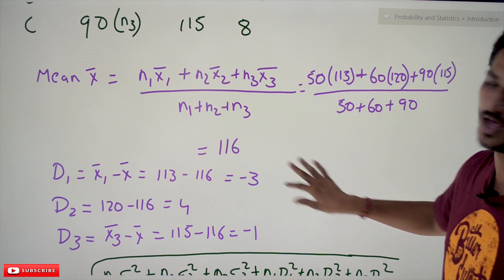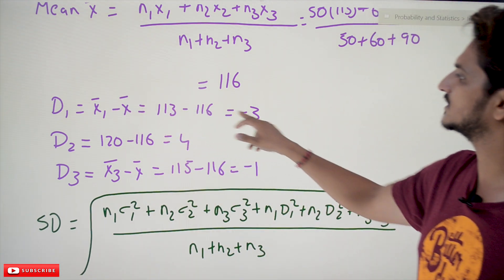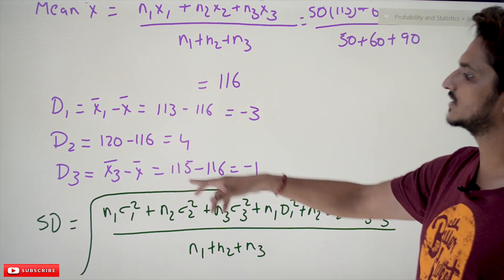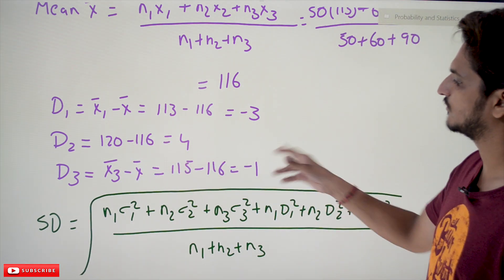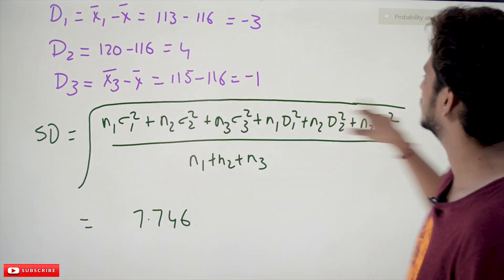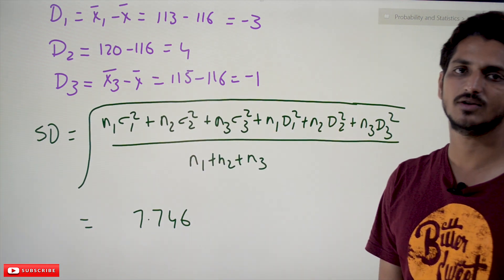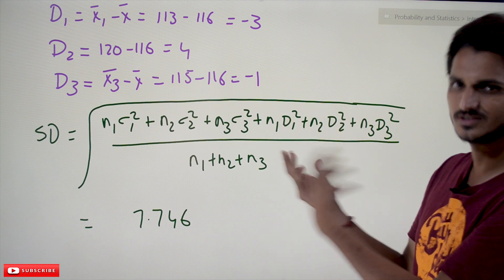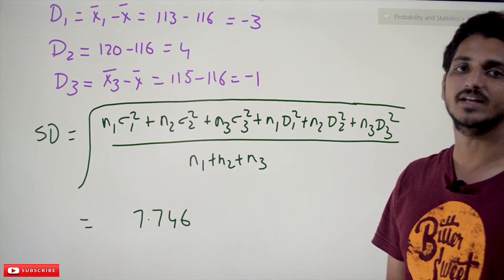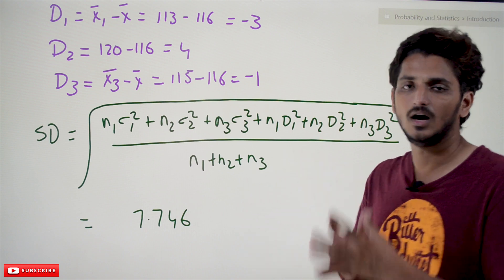Now we identify d₁, d₂, d₃: d₁ = x̄₁ − x̄ = 113 − 116 = −3; d₂ = x̄₂ − x̄ = 120 − 116 = 4; d₃ = x̄₃ − x̄ = 115 − 116 = −1. Substituting all these values into the combined standard deviation equation — n₁σ₁² + n₂σ₂² + n₃σ₃² + n₁d₁² + n₂d₂² + n₃d₃² divided by n₁ + n₂ + n₃ — the result is σ = 7.746.